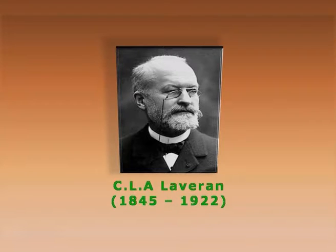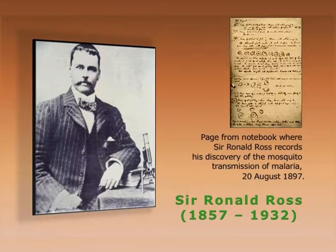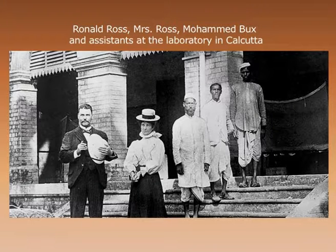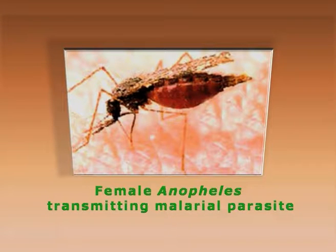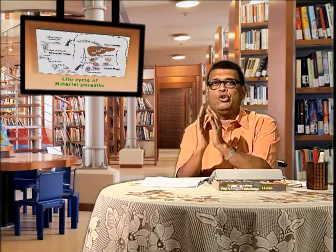Malaria — the term means bad air. It was described in 1880 by Charles Laveran, and Sir Ronald Ross, in 1897 in Kolkata, showed how the female Anopheles mosquito is involved in the malarial parasite Plasmodium vivax. Plasmodium vivax causes common malaria, and Plasmodium falciparum causes the dreadful malignant malaria. Other strains include Plasmodium malariae, Plasmodium ovale, and Plasmodium yoelii. The life cycle is divided between the female Anopheles mosquito, the definitive host where sexual reproduction occurs, and humans, the alternate host where asexual reproduction takes place.